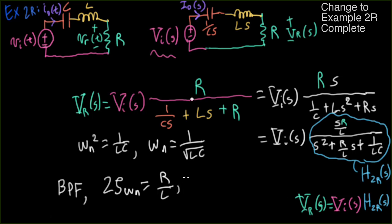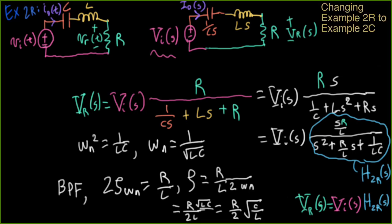All right, so we could write zeta equals R over L divided by 2 omega n. And let's see, that will give us R over 2 L. Omega n is 1 over square root of LC. So I would put a square root of LC up here. And I wind up with R over 2 times square root of C over L. So that's our damping ratio.